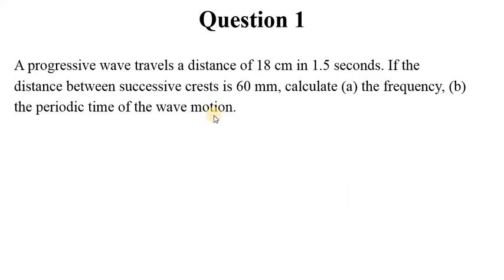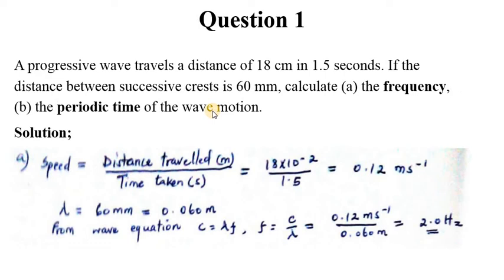So let's go to question 1. A progressive wave travels a distance of 18 centimeters in 1.5 seconds. If the distance between successive crests is 60 millimeters, calculate part A, the frequency, and part B, the periodic time of the wave motion. Our interest in this question is simply to find frequency and periodic time given the parameters of the wave as given in the question.